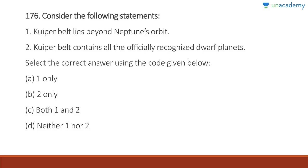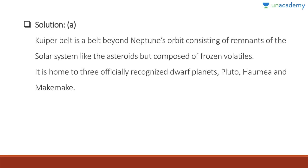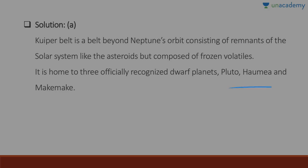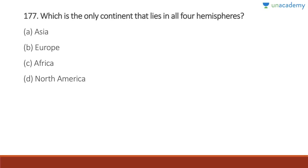Question 176: The Kuiper Belt lies beyond Neptune's orbit — correct. The Kuiper Belt contains all officially recognized dwarf planets — wrong. Answer is A. The Kuiper Belt is a belt beyond Neptune's orbit consisting of remnants of the solar system. It is home to three officially recognized dwarf planets: Pluto, Haumea, and Makemake.